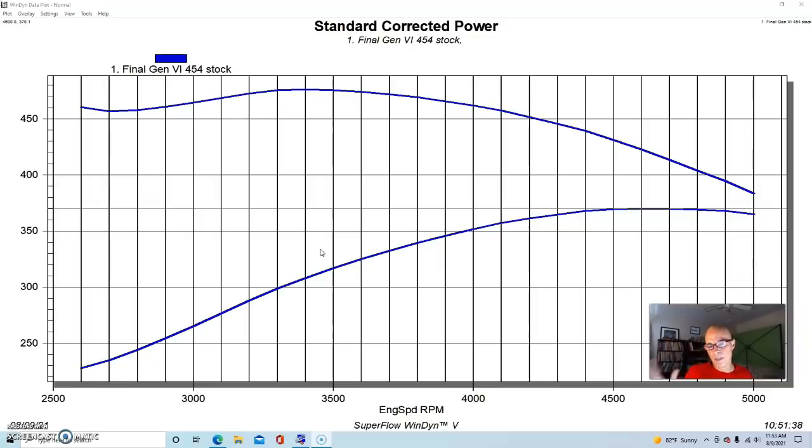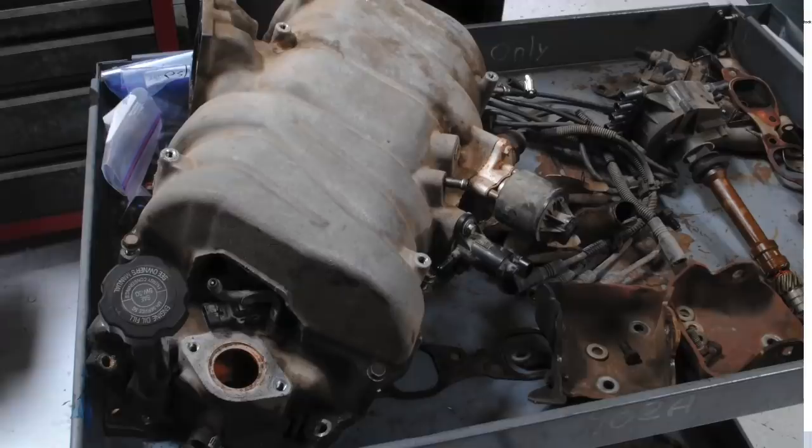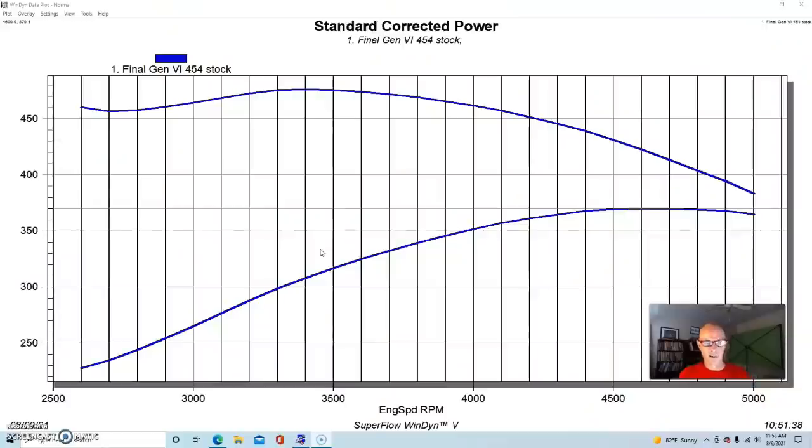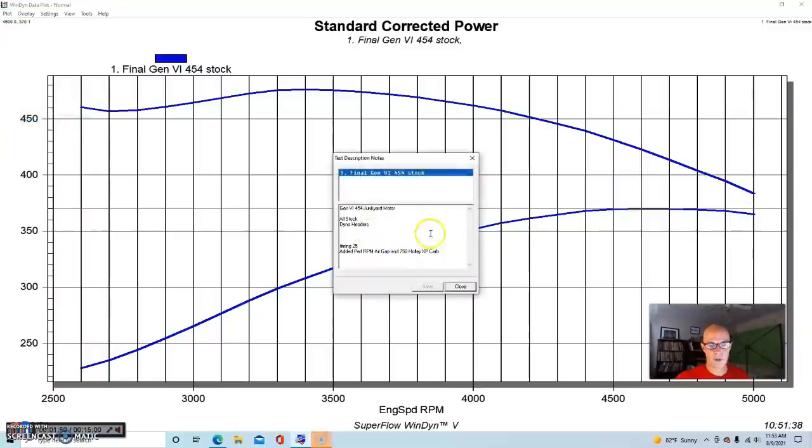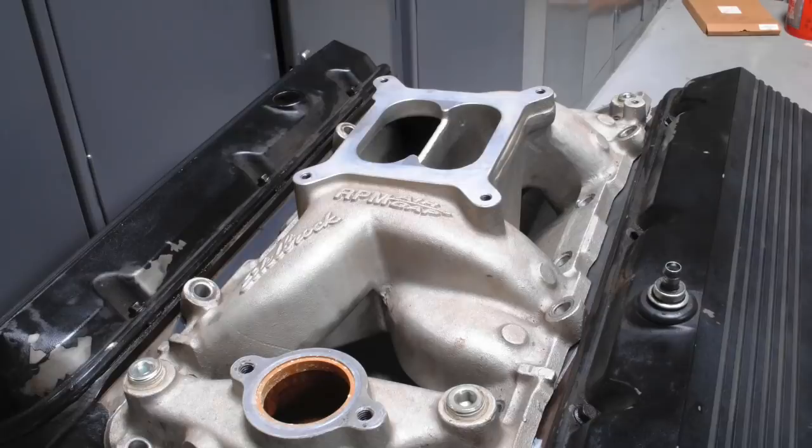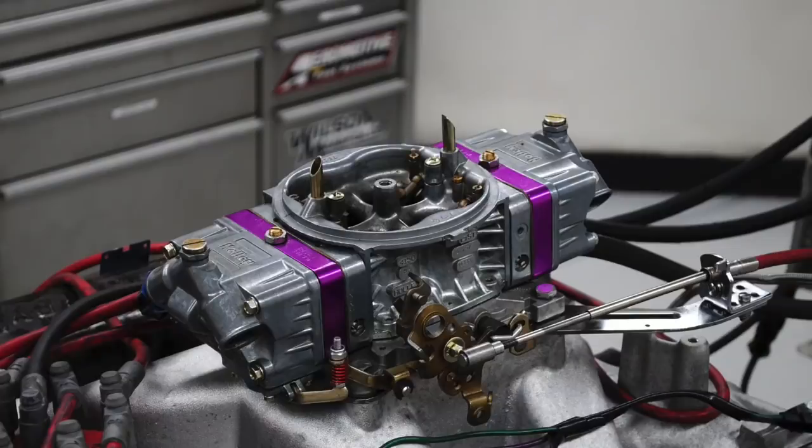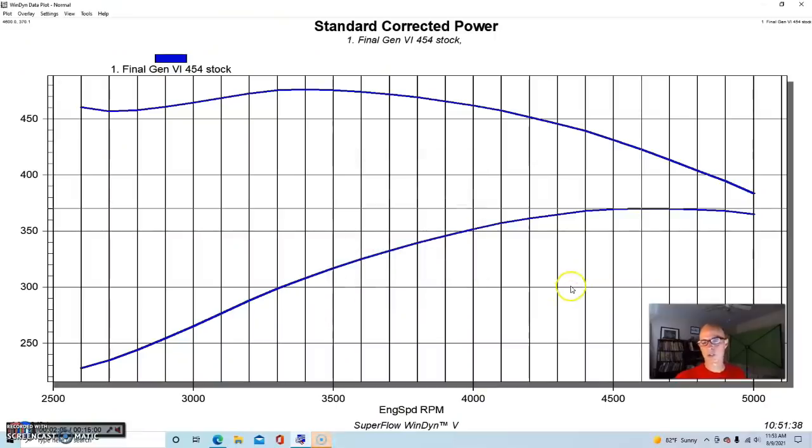As I said, we've run it with the factory fuel injection which works okay, it makes a little bit less power and a little bit more torque. But we ran this one with a dual plane intake - on this example we ran an RPM Air Gap and a 750 Holley carburetor with the dyno headers that we run on.